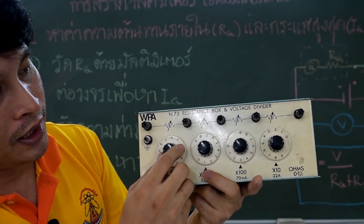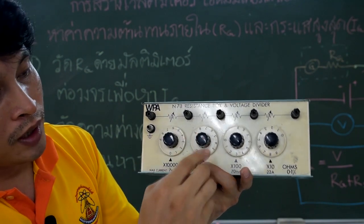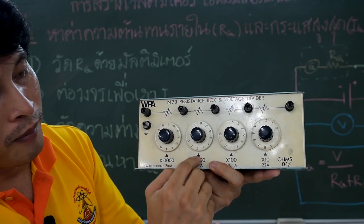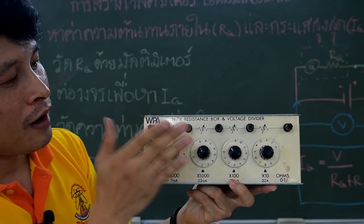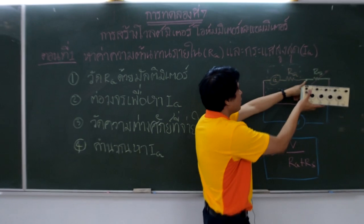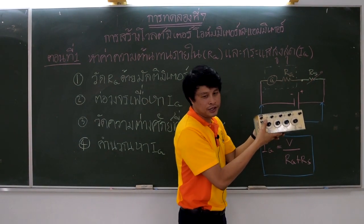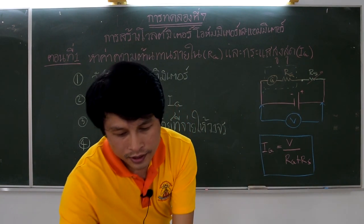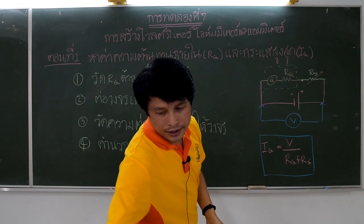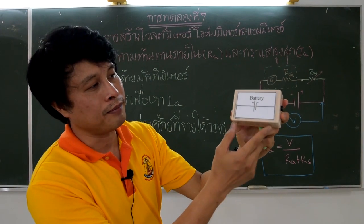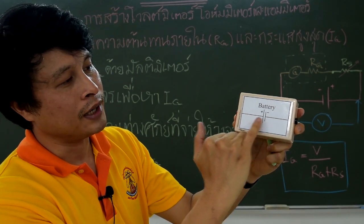The variable resistor has knobs labeled 10,000, 1,000, and 100. For example, if the value of resistance is 12,380 ohms, you adjust it using the knobs. We use RS connected in series with the galvanometer to decrease the current. Then we connect the circuit to the battery. You can see the positive pole and negative pole of the battery, and you can control the direction of current using the battery poles.